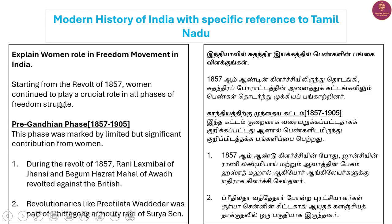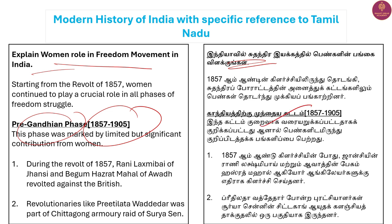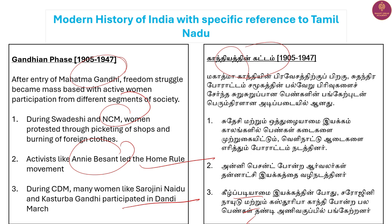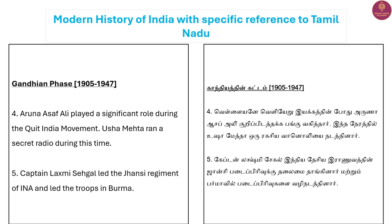For example, let's look at: 'Women's role in the freedom movement in India.' This is a general answer for Group 2 Mains. There is a pre-Gandhian phase from 1857 to 1905. In the Gandhian phase, women like Lakshmi Sehal and others played important roles.